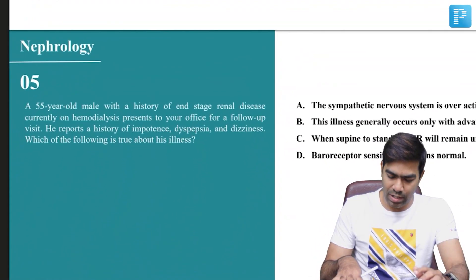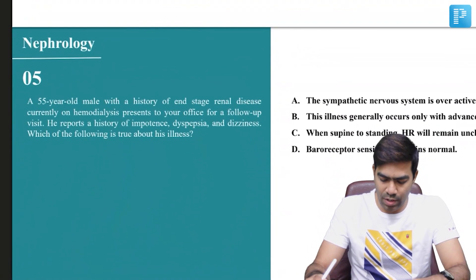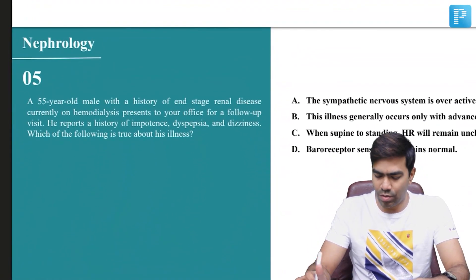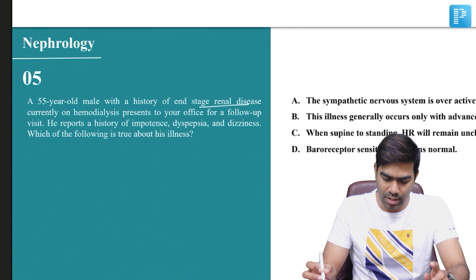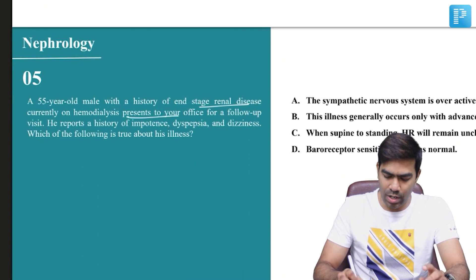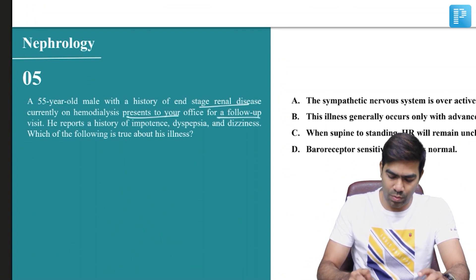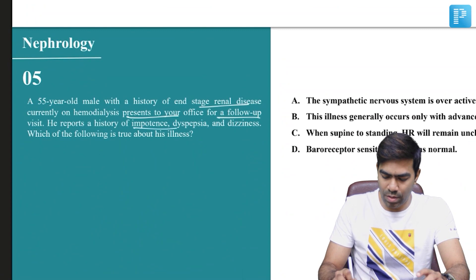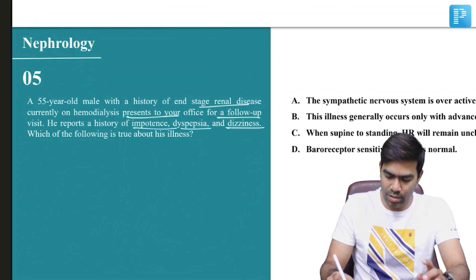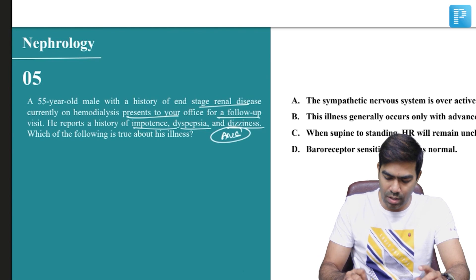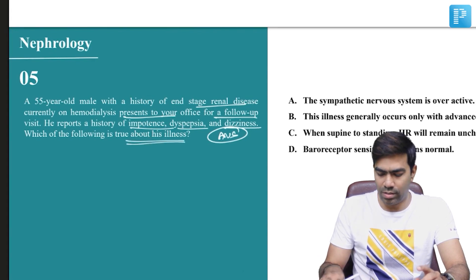Coming to question 5, here is a 55-year-old male with a history of end-stage renal disease, currently on hemodialysis, presenting to your office for a follow-up visit. He reports history of impotence, dyspepsia, dizziness, and so on. These are all autonomic symptoms. Which of the following is true about his illness?